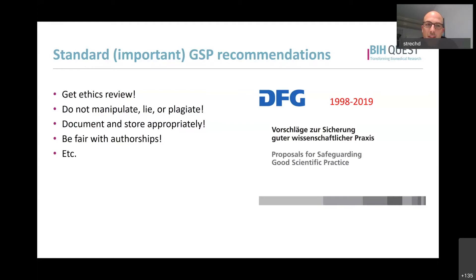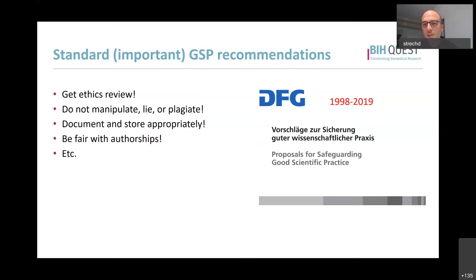In a certain way - simplified, but in a certain way - you can say all these guidelines address how we can avoid bad practices. Good scientific practice recommendations recommend something on how to avoid bad practices in research. And the relatively new debate is about: what are recommendations that we maybe even should have, that primarily aim to even improve the good practices? Because there are many practices that make our research good in terms of robust, trustworthy, useful for other scientists, useful for society.